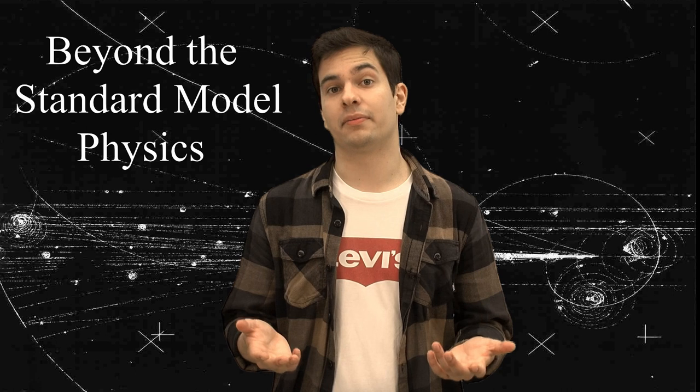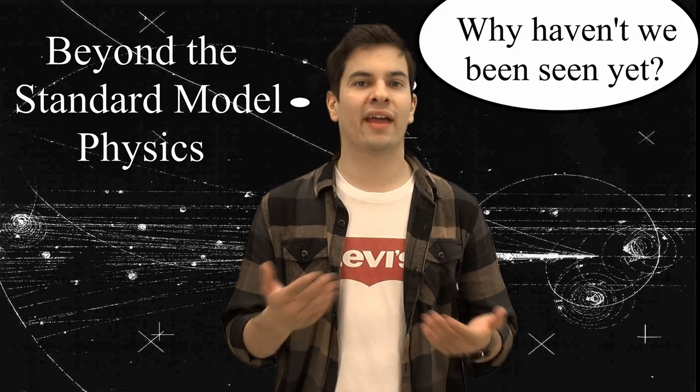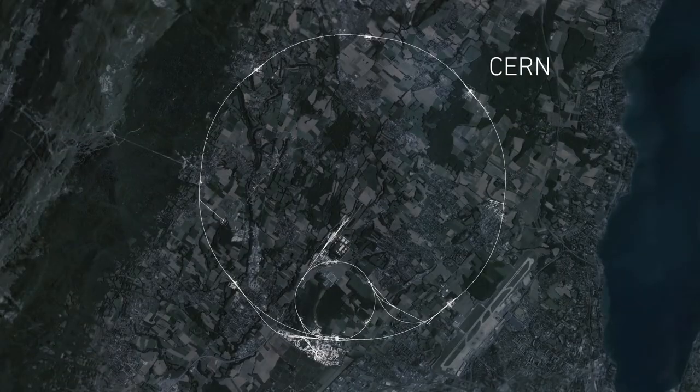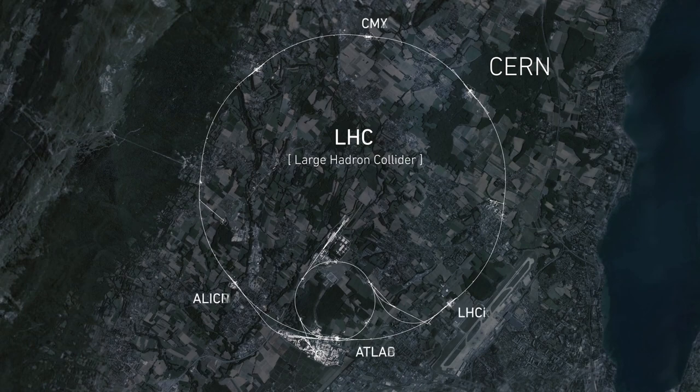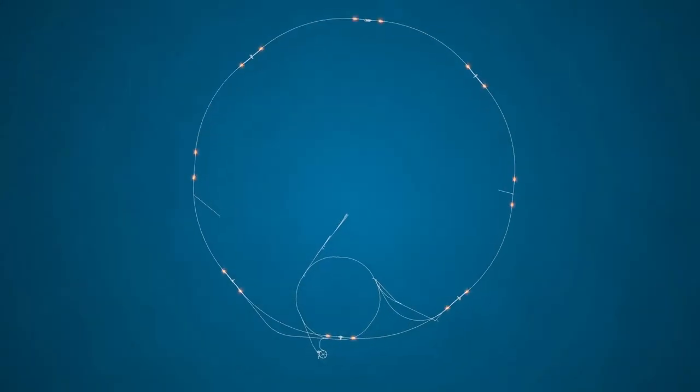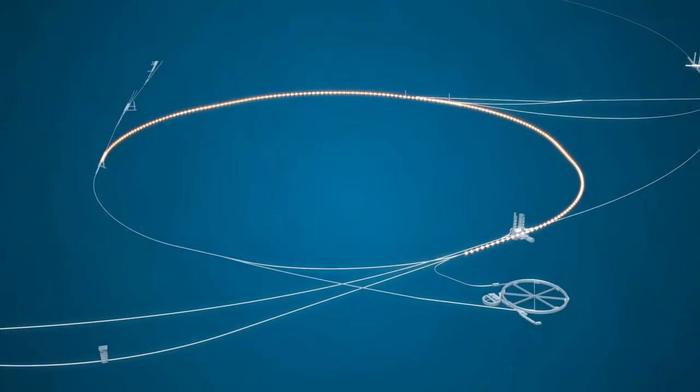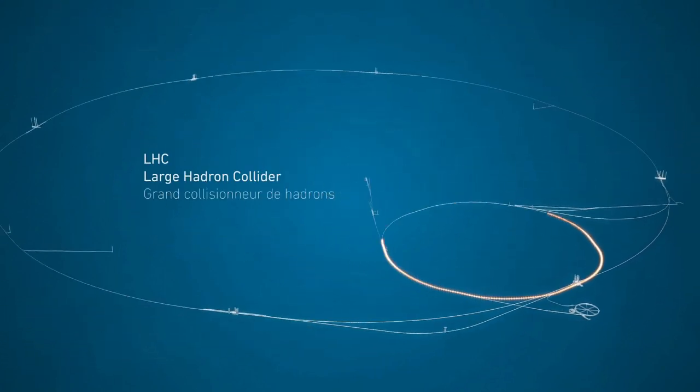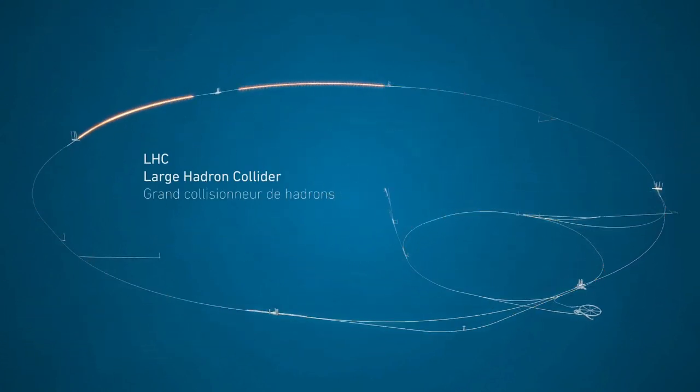If we know that there are physics beyond the Standard Model, why haven't we been able to see them then? In order to answer this, we need to first know how the experiments are made. We have known for the past century that energy can be transformed into mass and so, at places like the LHC, we accelerate bunches of particles very close to the speed of light and make them collide and consequently interact with each other while hopefully creating new particles.